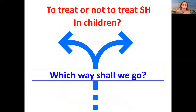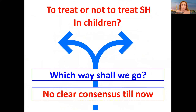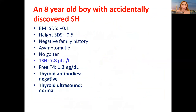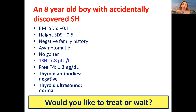There is no clear consensus till now — it's even more difficult in children than adults. Let me start with the story of an eight-year-old boy accidentally discovered with subclinical hypothyroidism. The boy had normal BMI and height SDS, negative family history of thyroid disease, asymptomatic, no goiter, TSH 7.8, normal T4, negative antibodies, and normal ultrasound. Would you treat or wait?